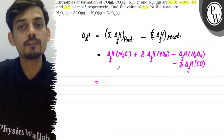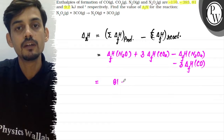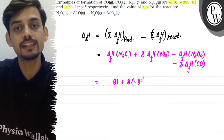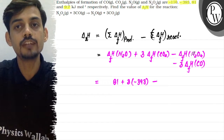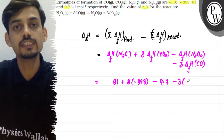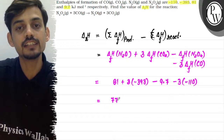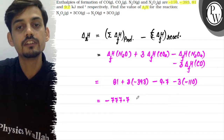Substituting the values: the enthalpy of formation of N₂O is 81, plus three times minus 393 for CO₂, minus 9.7 for N₂O₄, and minus three times minus 110 for CO. Solving this gives the enthalpy of the reaction as minus 777.7 kJ.